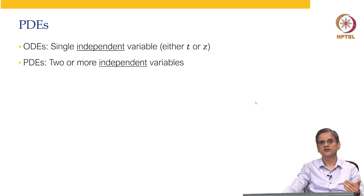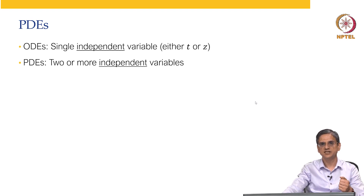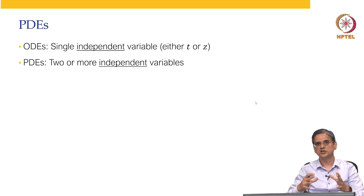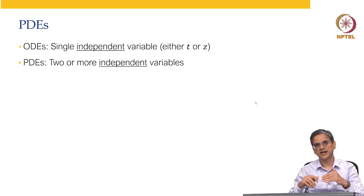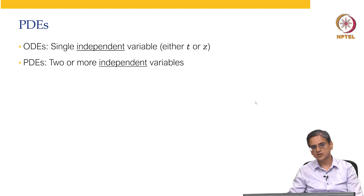For example, if something varies both with time and location, you will have time and z as independent variables. If something varies across a two-dimensional sheet, you are going to have partial differential equations in x and y. So that is about the difference between ODEs and PDEs. Let us take a few quick examples.